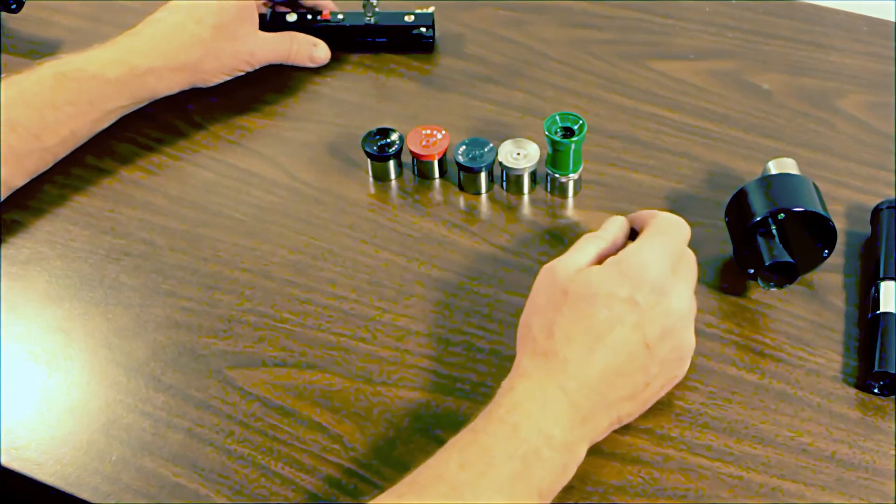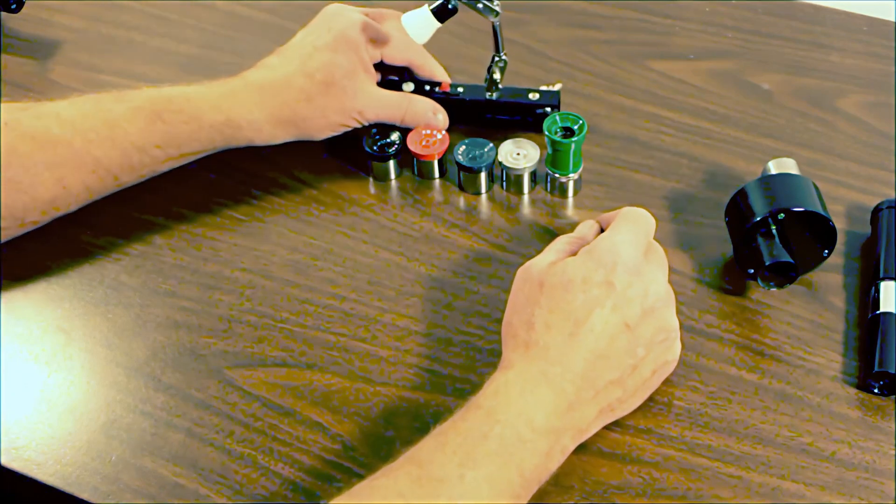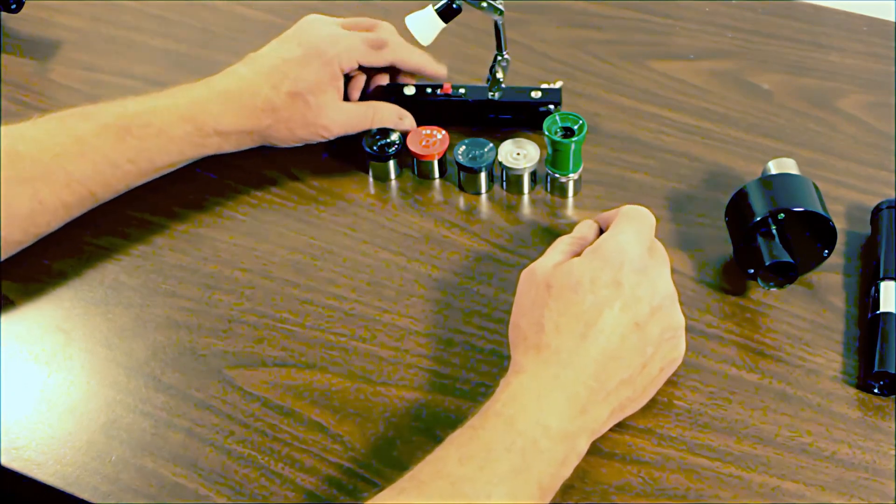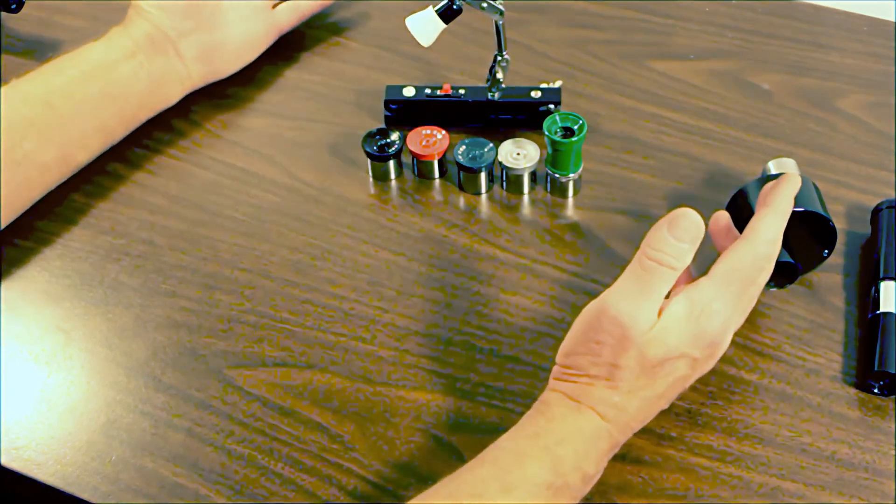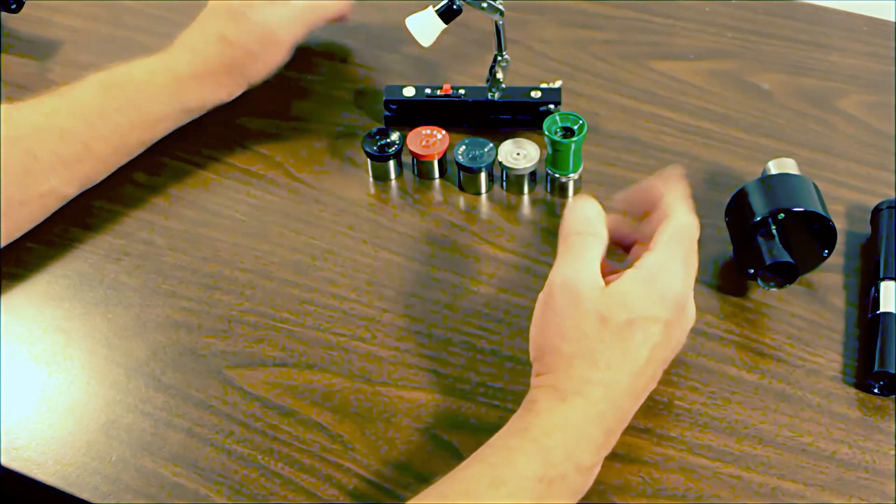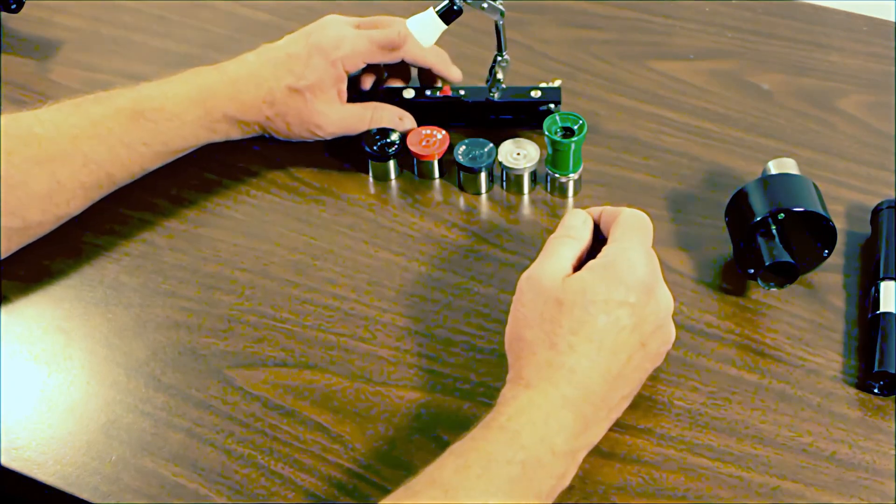One of the other very nice things about this telescope is this device here. This is a tray light. Not many telescopes had these and they're charming.